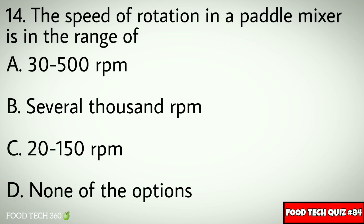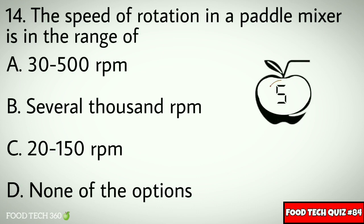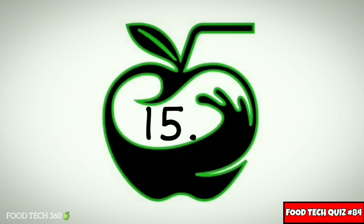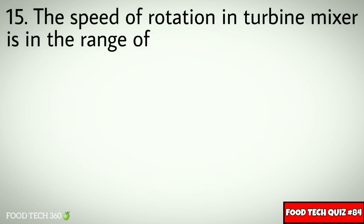Question number 14: The speed of rotation in a paddle mixer is in the range of — Options: A. 30 to 500 RPM, B. Several thousand RPM, C. 20 to 150 RPM, D. None of the options. Correct answer: C. 20 to 150 RPM.